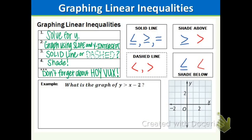Now let's talk about how to graph linear inequalities. Step one: solve the equation for y, because it's much easier to graph. Step two: graph using slope and y-intercept — content we reviewed in chapter five. Step three: figure out if it's a solid or dashed line. Step four: shade where we're supposed to shade. And lastly, don't forget about HOI VUX. If you have a horizontal line, the equation starts with y; if you have a vertical line, the equation starts with x.